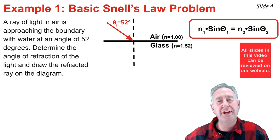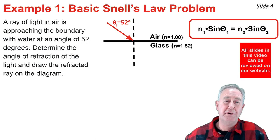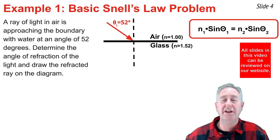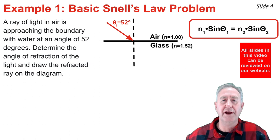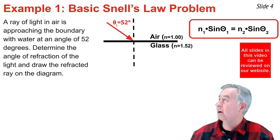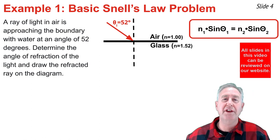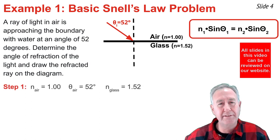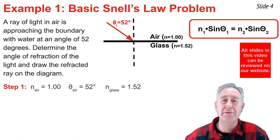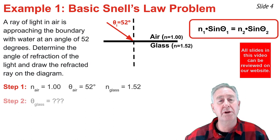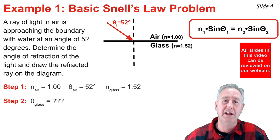In our first example, a ray of light is in air traveling towards the boundary with glass. The angle of incidence is stated as 52 degrees, and the index of refraction values are on the diagram. I want to solve for the angle in glass and draw the refracted ray. I begin by identifying what I know: the n of air and the n of glass, 1.00 and 1.52, and the angle in the air. What I'm looking to calculate is the angle in the glass.